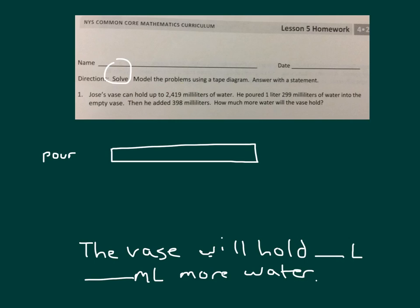In Jose's first pour, he pours in 1 liter, 299 milliliters of water. Then he adds, he adds how much? He adds 398 milliliters of water.